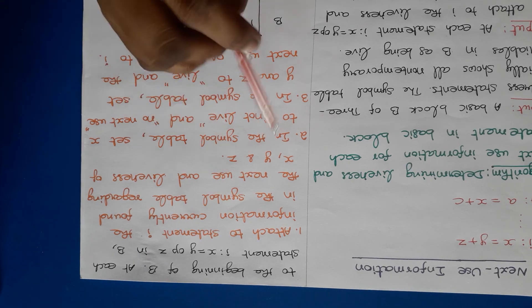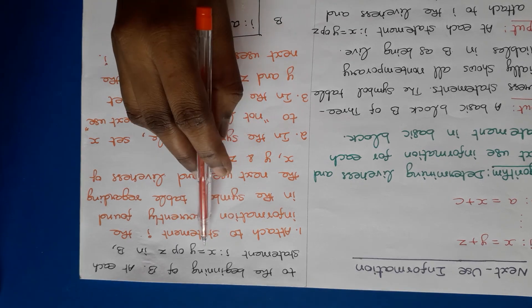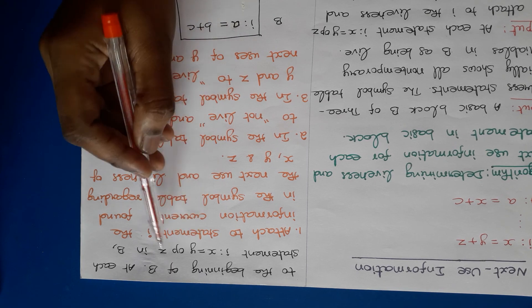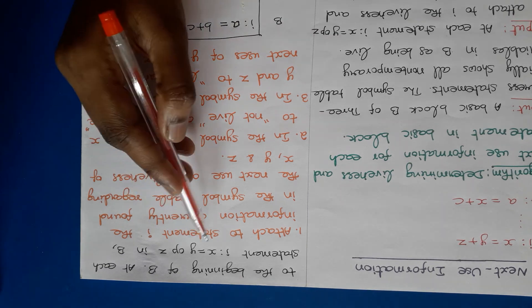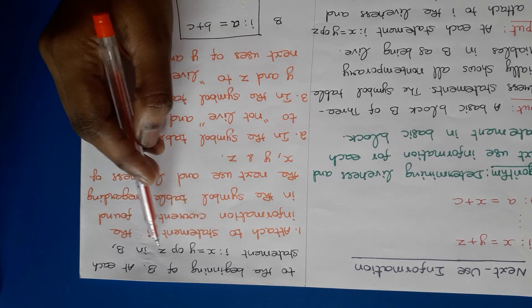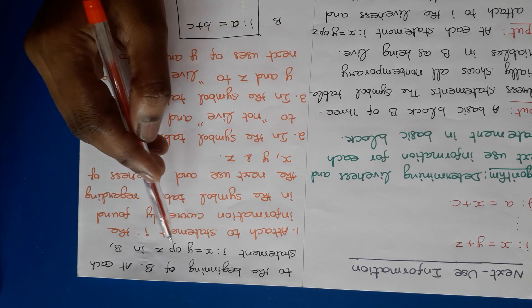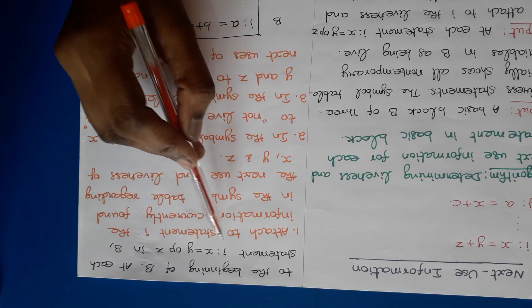x is the left-hand side variable. In the second step, we set x to no next use as well as not live. In the third step, in the symbol table, we set y and z to live, and set the next use of y and z to i. That is, the right-hand side variables y and z must be set as live as well as next use pointing to i, since a basic block has a maximum of three addresses.